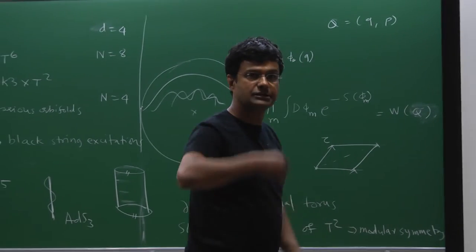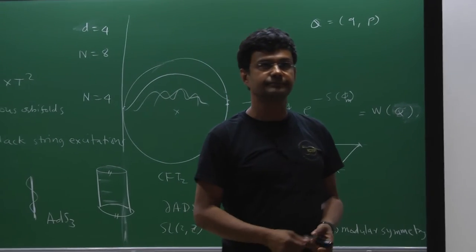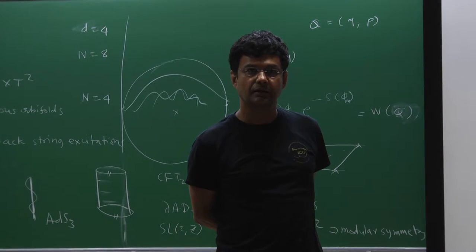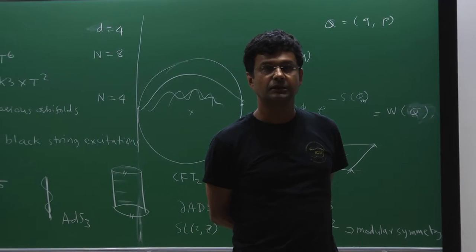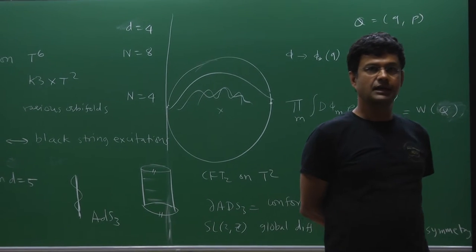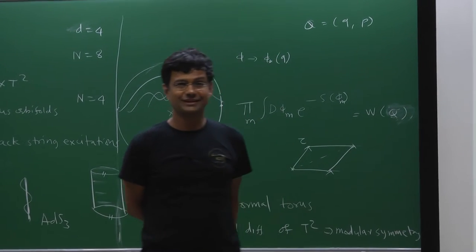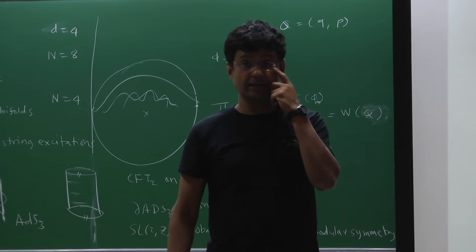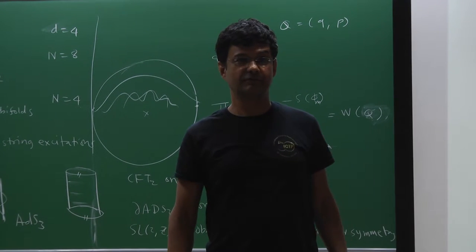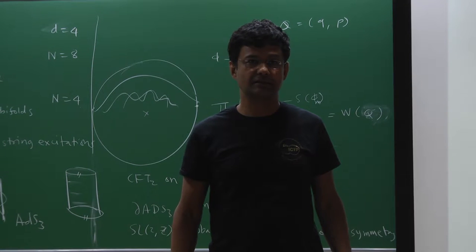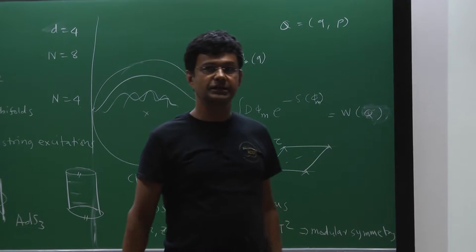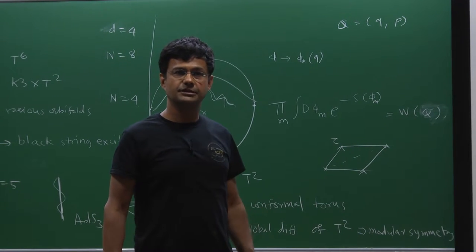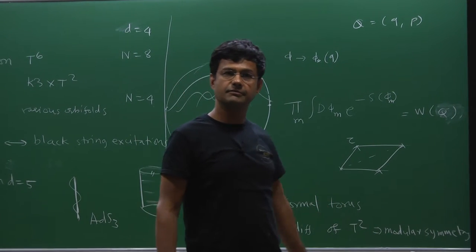Because you have a CFT, AdS3 is dual to a CFT, and partition functions of CFTs are typically modular forms. That's one physical reason why you can expect modularity to be present in this problem. It is actually quite subtle — when you have wall crossing, modularity is very tricky. But so that you have something to keep in mind, this modular symmetry is not something falling from the sky. It's a very interesting problem to do a path integral in AdS3, but there are technical difficulties because of which it has not been completed — though it is certainly a very interesting problem.